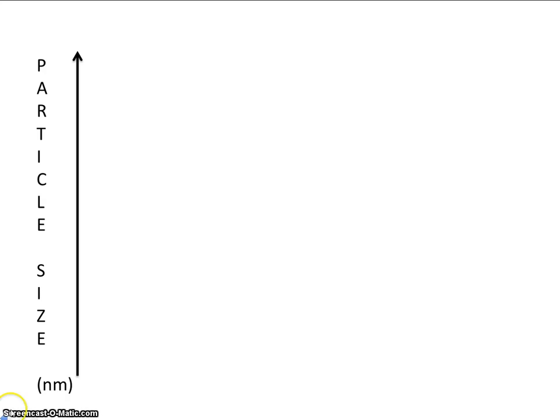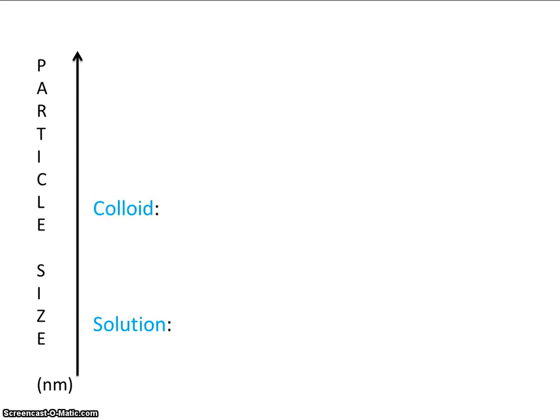One way that mixtures can be classified is based on the size of their particles. The particles are typically measured in nanometers, and as we proceed in this direction, the particle size will be increasing. We're going to look at solutions, colloids, and suspensions.